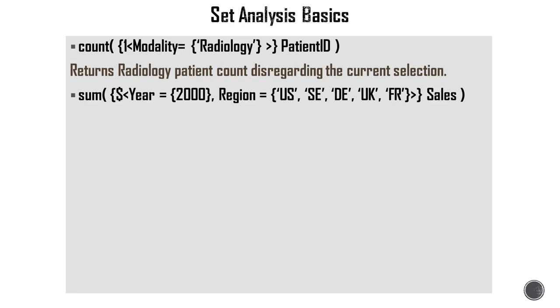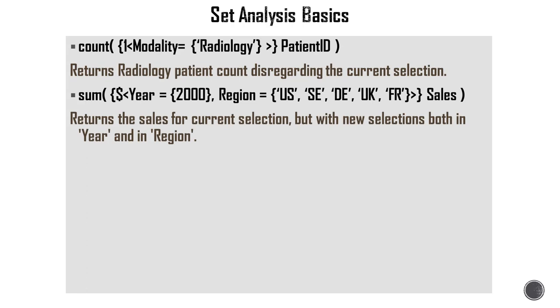Then in the second expression we have dollar as an identifier, which means it's going to respect user selections. And then we have a couple of modifiers. We have one filter that says Year equal 2000, comma, Region equal, and then we have a whole bunch of values. So these two filters will work in AND mode. It will read Year equal 2000 AND Region equal several values. Now those values within regions are in OR mode, so you can read that as Region equal US or SE or DE or UK or FR. Comma separates two fields and they're acting in AND mode, but the values within a specific field are in OR mode. So again, it returns the sales for current selection but with new selection both in Year and Region.